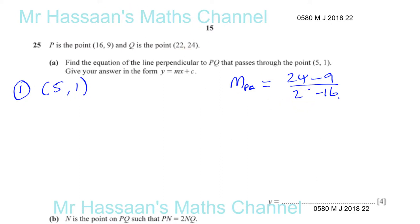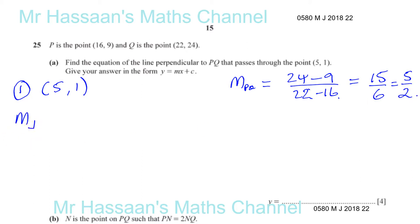24 minus 9 gives us 15, and 22 minus 16 gives us 6. That simplifies — taking the common factor of 3, you get 15 divided by 3 is 5, and 6 divided by 3 is 2. So the gradient of the line perpendicular to PQ is going to be the negative reciprocal of this, which is negative 2 over 5.